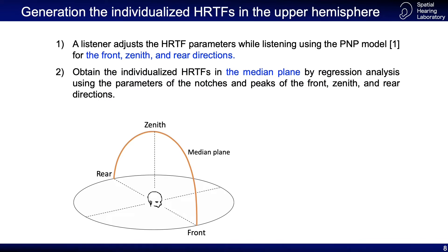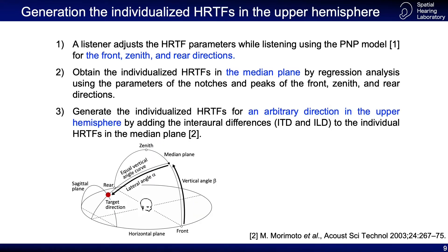Then, the individualized HRTFs in the median plane are obtained by regression analysis using the parameters of the notches and peaks of the front, zenith, and rear directions. Finally, the individualized HRTFs for an arbitrary direction in the upper hemisphere are obtained by adding the interaural time difference and interaural level difference to the individualized HRTFs in the median plane.